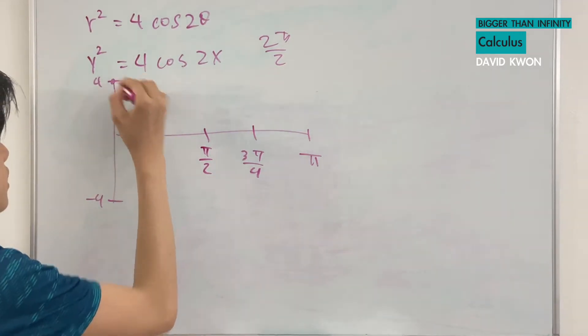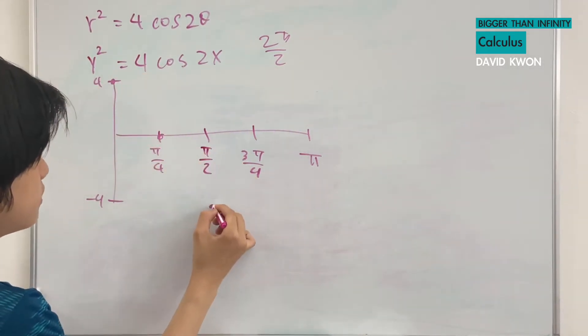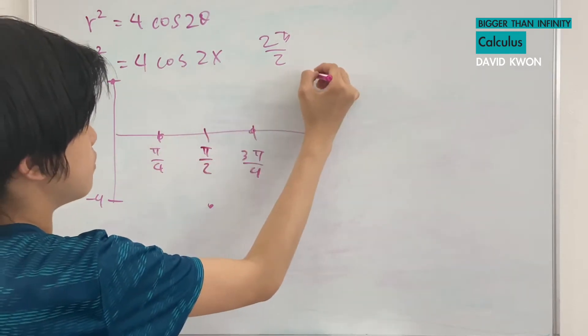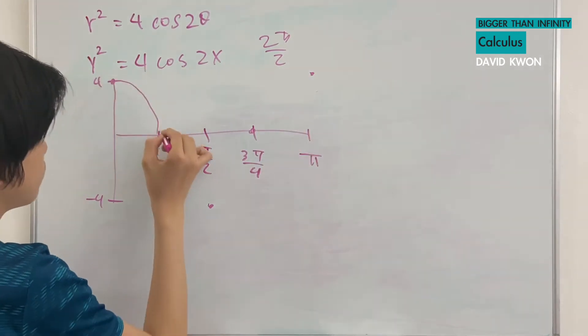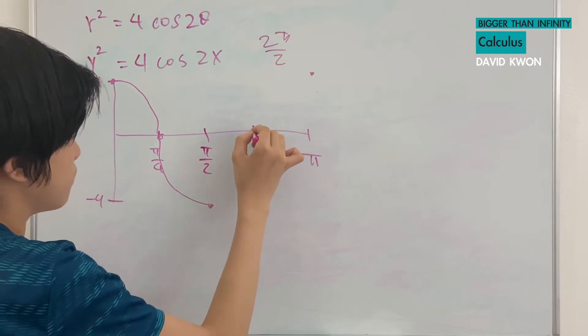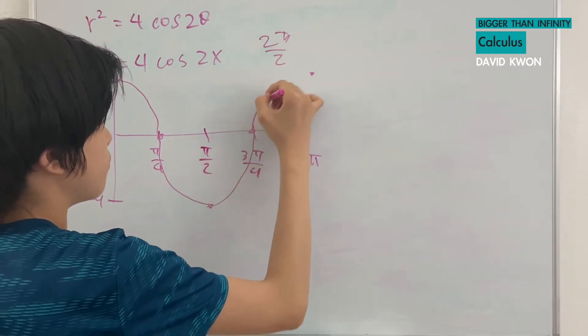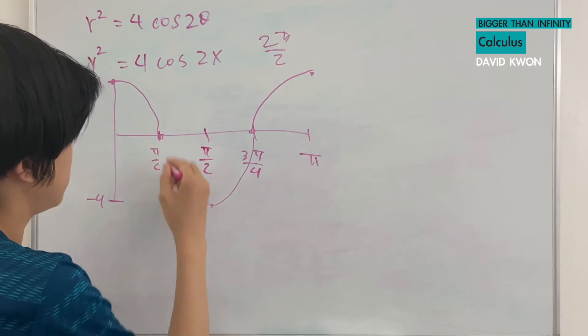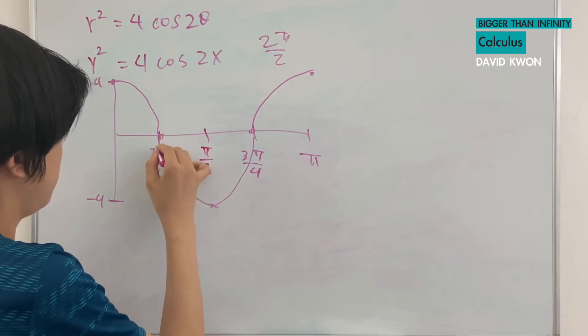And graphing this, it looks like this. This is 2 fat.